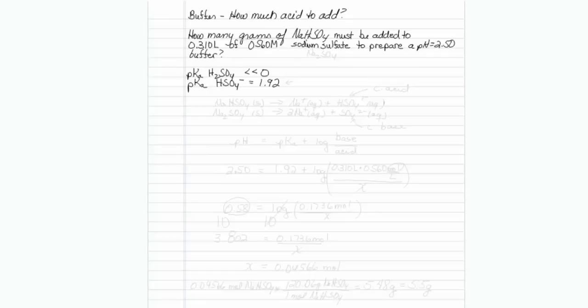This is how to work a buffer problem when you're given the amount of base but you have to figure out how much acid to add. How many grams of sodium hydrogen sulfate must be added to 0.310 liters of 0.560 molar sodium sulfate to prepare a pH equal 2.50 buffer?